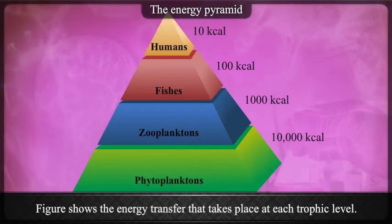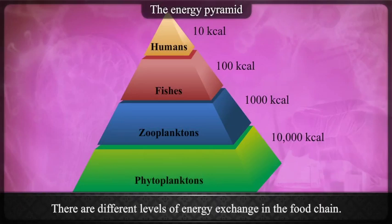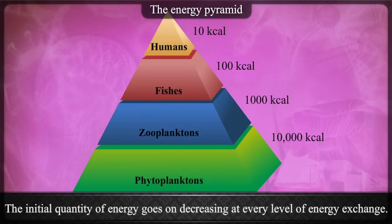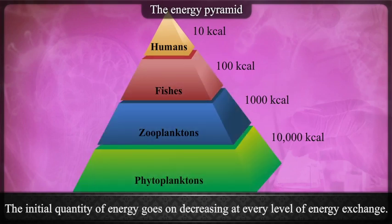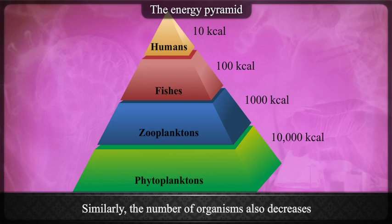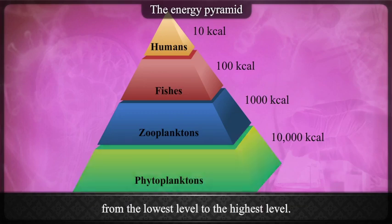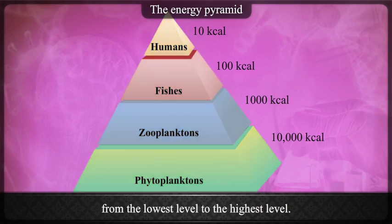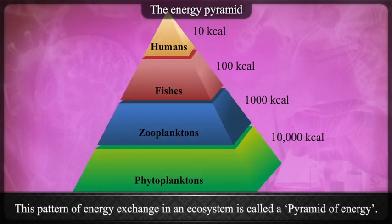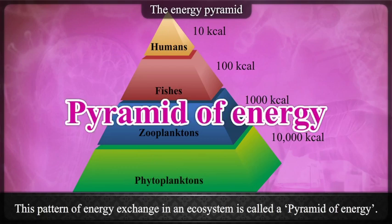The figure shows the energy transfer that takes place at each trophic level. There are different levels of energy exchange in the food chain. The initial quantity of energy goes on decreasing at every level of energy exchange. Similarly, the number of organisms also decreases from the lowest level to the highest level. This pattern of energy exchange in an ecosystem is called a pyramid of energy.